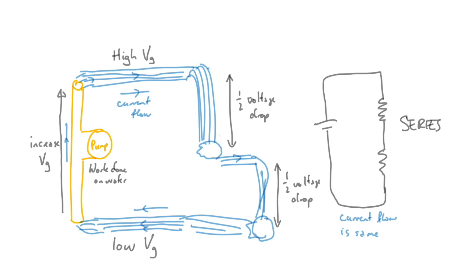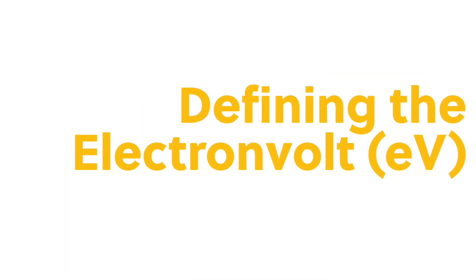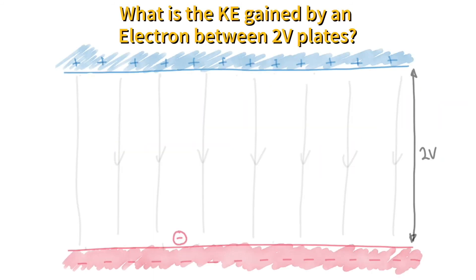Let's define the electron volt, and we can do this with an example. What is the kinetic energy gained by an electron accelerated between two-volt plates?